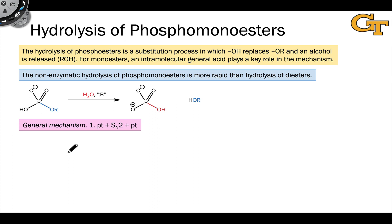Let's look at the hydrolysis of phosphomonoesters in a little more detail. Recall that the dominant ionization state of a phosphomonoester is the monoanionic form, the form with an overall charge of negative 1.